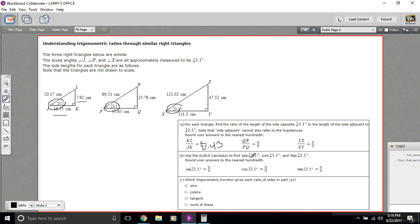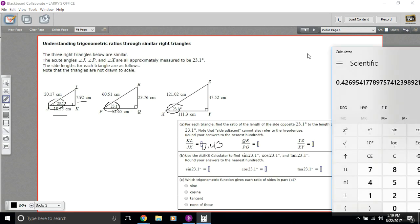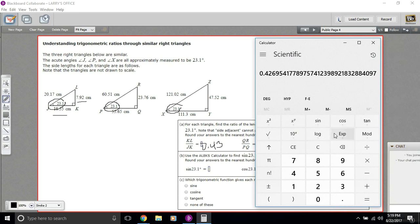And then it says use the calculator to find the sine of the angle, the cosine of that angle, and the tangent of that. So let's do that. The angle in each of these is 23.1. So 23.1, and we'll take the sine. So that's a 0.39.